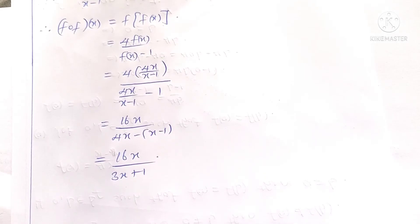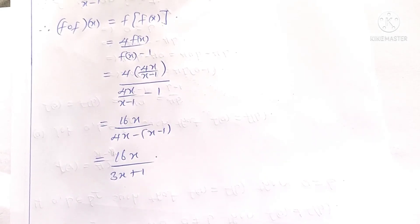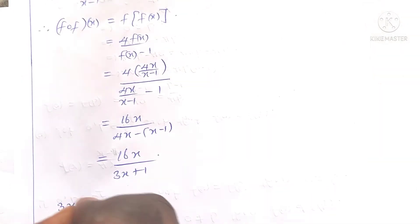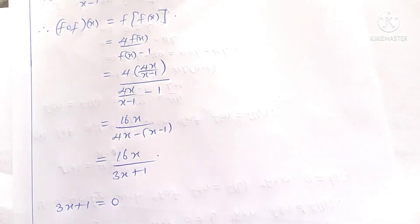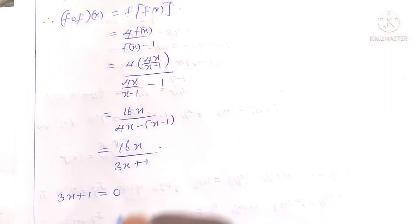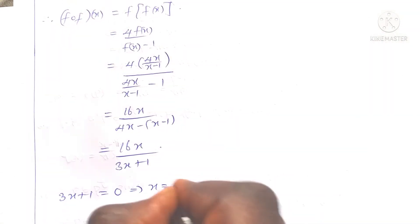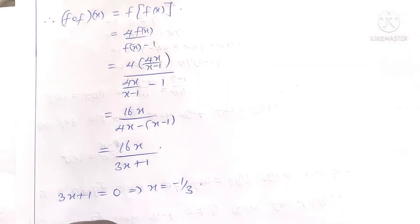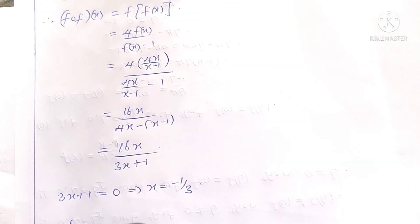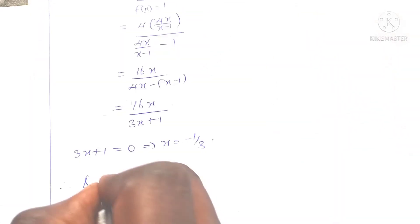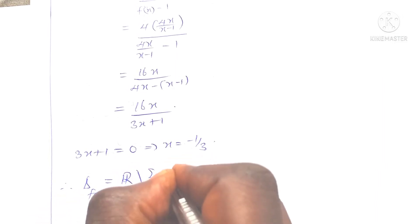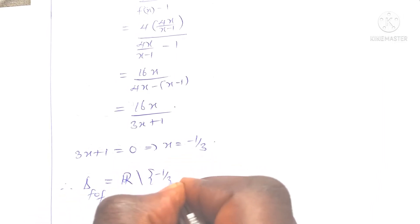The domain of this function is the set of real numbers, except for the value of x for which 3x plus 1 equals 0. Since 3x plus 1 equals 0 gives x equals negative one-third, the domain of f of f is simply the set of real numbers excluding negative one-third.